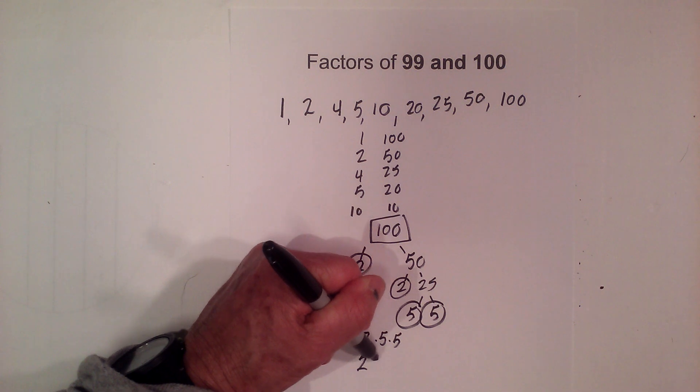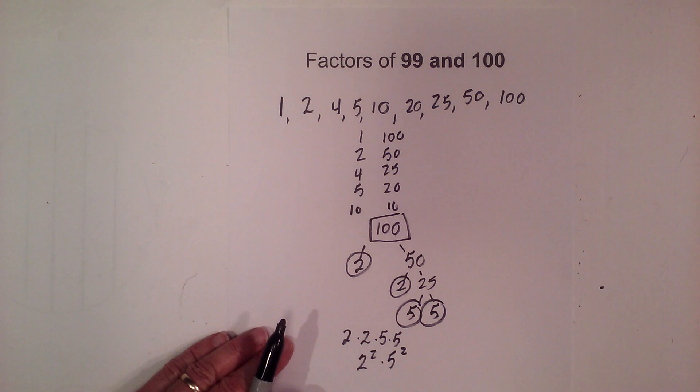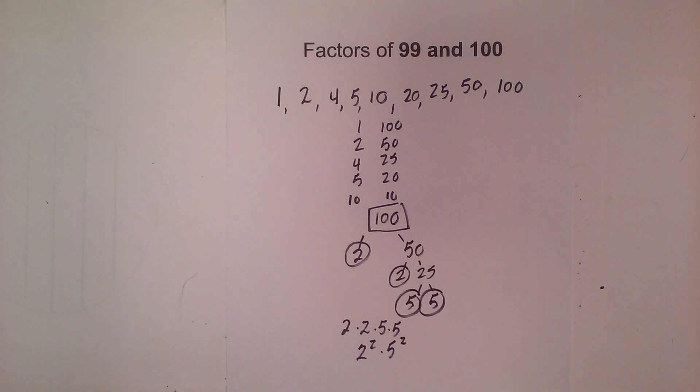you can write this 2 squared times 5 squared. I hope that helps with the factors of 99 and 100. Thanks for watching.